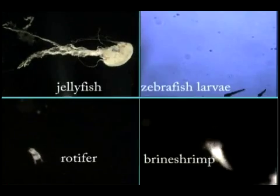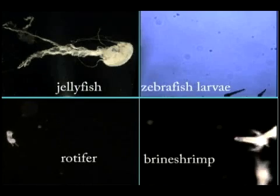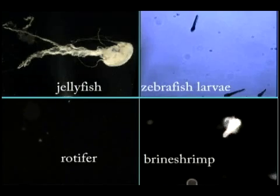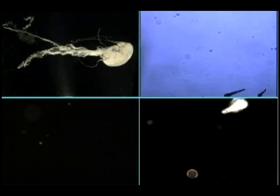Since plankton are organisms which drift freely in water, all floating and drifting animals such as jellyfish and fish larvae are classified as zooplankton.